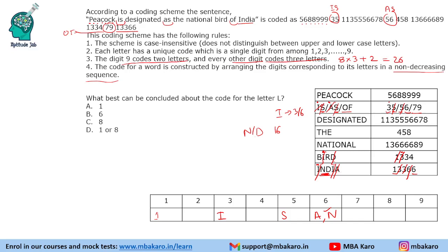So we are left with B, R, S, 3 and 4. Now let's look at the word the, D, H, E. 4, 5, 8. New letters we cannot determine. So we will now have to go to the longer words. So let's first go to peacock.